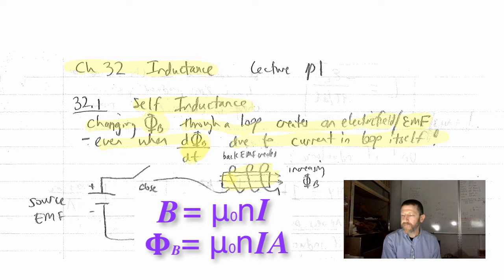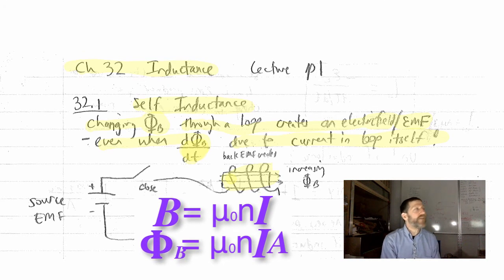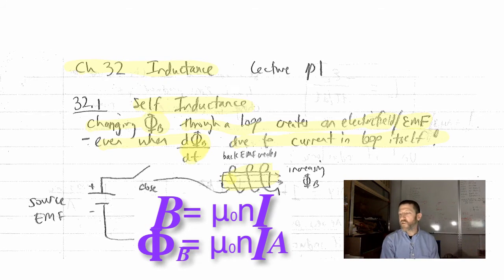And the magnetic flux through the coil is just that magnetic field times the cross-sectional area of the coil. And if you change that current, you will be changing magnetic field and hence changing the magnetic flux. Here's how this works.